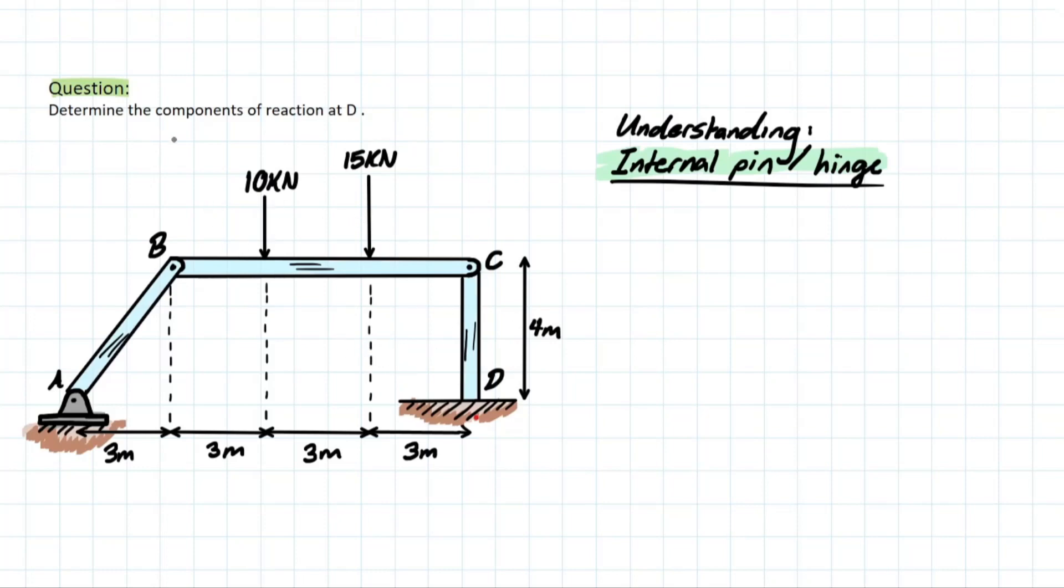So the problem goes, determine the components of reaction at D. So we're looking at a frame structure here and we're looking at reaction D. What does that mean? We have reaction D-Y, the reaction D-X, and we also have moment D, because this is a fixed support. Fixed supports mean that the member cannot rotate and it cannot translate anywhere at this point because it's rigidly fixed.